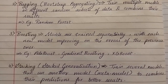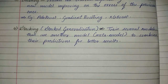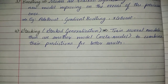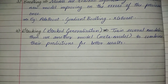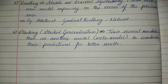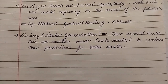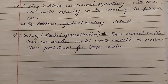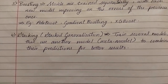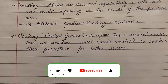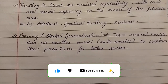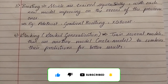The fourth way to combine classifiers is stacking, also termed as stacked generalization. You train several models and then use another model — a meta-model — to combine their predictions for better results. Thank you for watching.